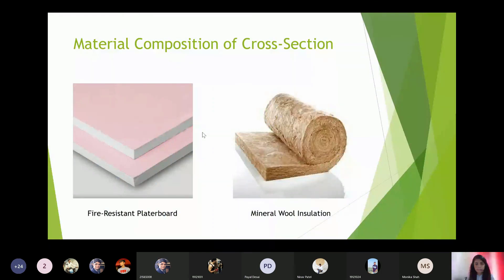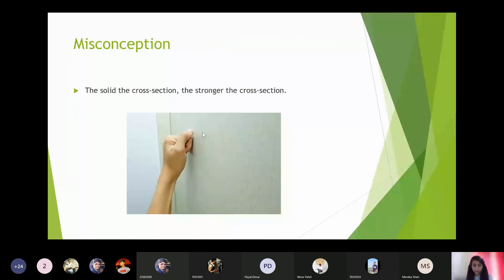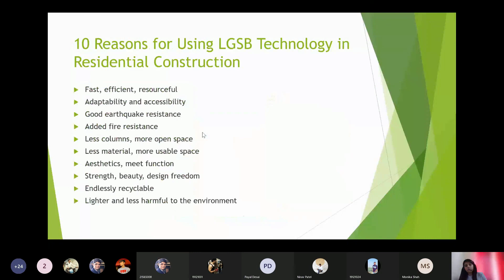Why is LGSB not prominent here? When we check a wall's strength, we knock it and expect a heavy solid sound — if it sounds hard we think it's stronger. This is a big misconception. You want strong walls — use steel instead of bricks. You can at least use this in partition walls. Here are ten reasons for using LGSB technology in residential construction. First, it's fast, efficient, and resourceful.